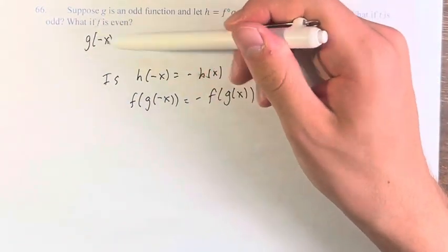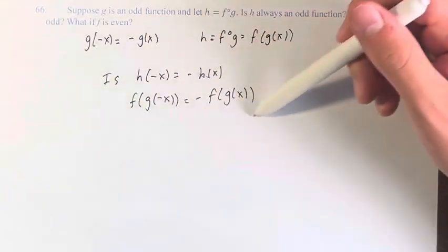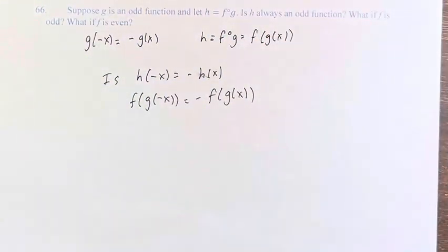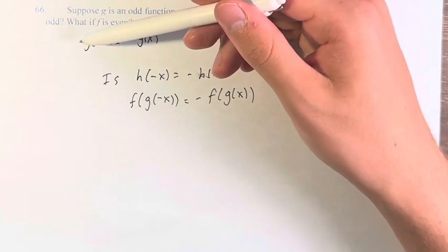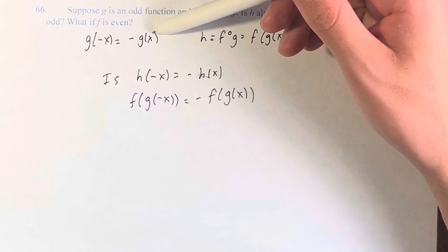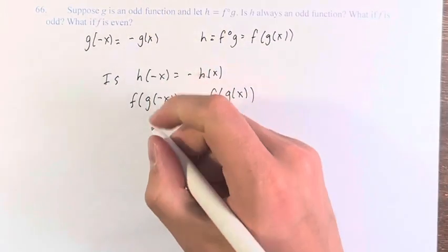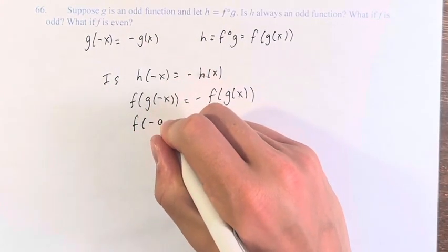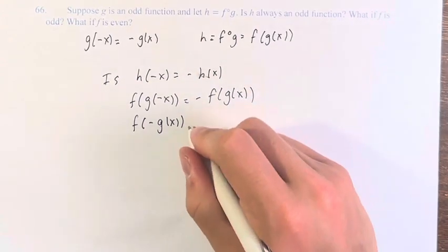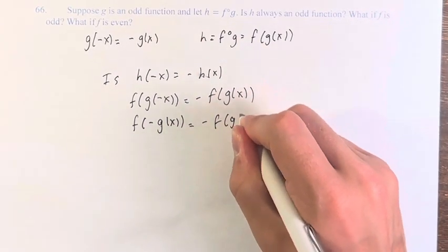Because we know something about g, we can actually find out, is this odd, is this even? So if we know that g of negative x is equal to negative g of x, we can plug that in to here. So this is f of negative g of x is equal to negative f of g of x.